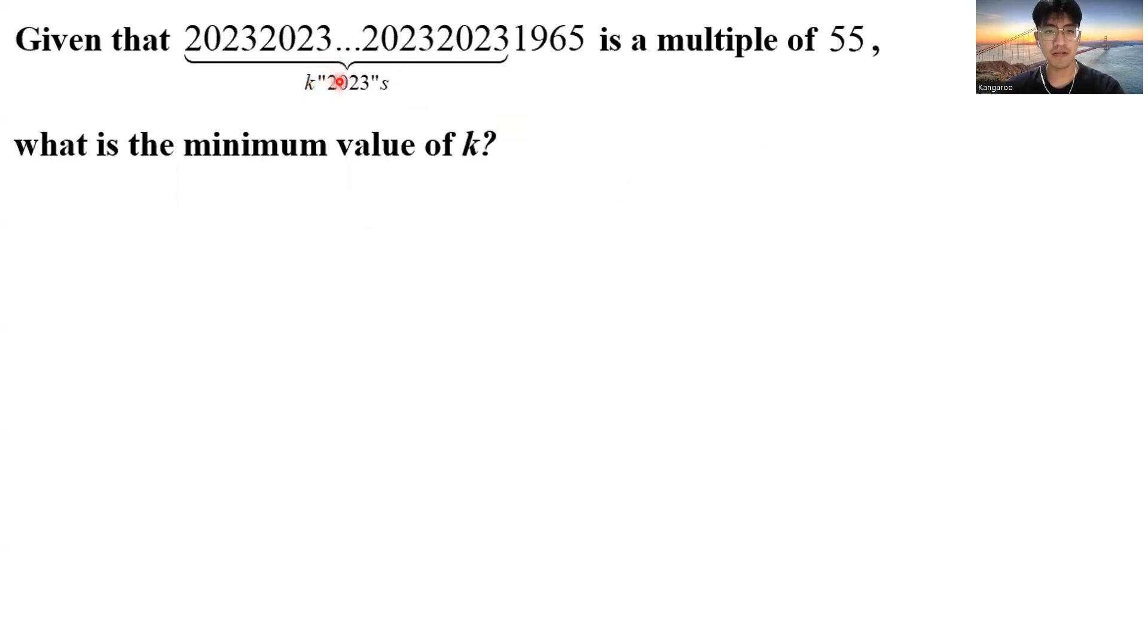I have k, 2,023, following with 1,965, and this is a multiple of 55. If this number is a multiple of 55, it means that it must be both a multiple of 5 and 11, which is the factors of 55. And what is the minimum value of k? So let's check. Is this number a multiple of 5? It is. I have a 5 at the unit digits, so I know it must be a multiple of 5. Now let's check. Is this number a multiple of 11?